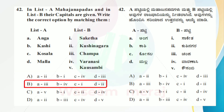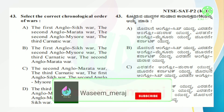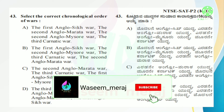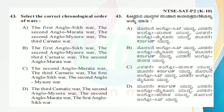Now let's go to question number 43. Select the correct chronological order of wars. Order A: the first Anglo-Sikh war, the second Anglo-Maratha war, the second Anglo-Mysore war, the third Carnatic war. Order B: the first Anglo-Sikh war, the second Anglo-Mysore war, the third Carnatic war, the second Anglo-Maratha war.